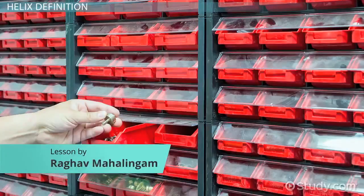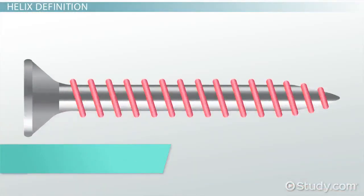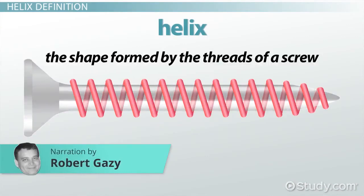Next time you're at a hardware store, pick up a screw and look at the threads closely. The shape formed by the threads of a screw is called a helix.